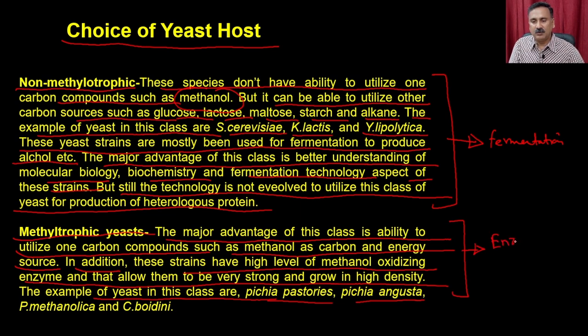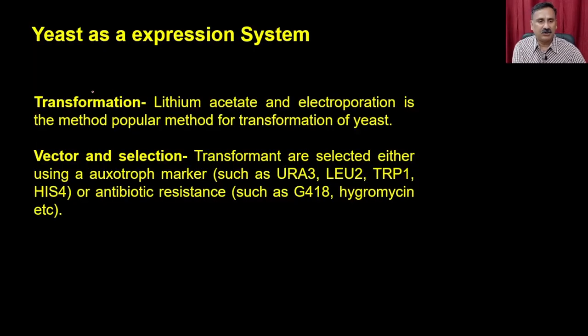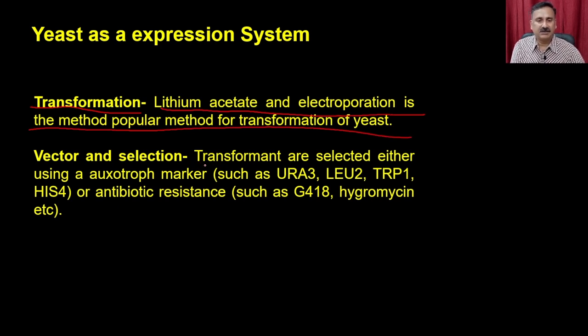When methylotrophic yeast utilize methanol as a carbon source, they also have downstream promoters and other machinery that allow them to be induced. As far as transformation is concerned, lithium acetate and electroporation are the popular methods for transformation of yeast. The vectors can be selected based on auxotrophic markers or antibiotic resistance such as G418 or hygromycin.